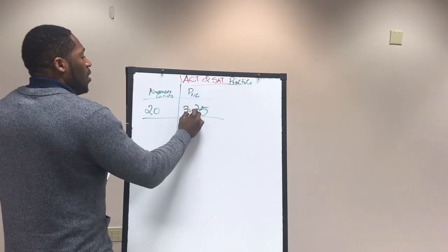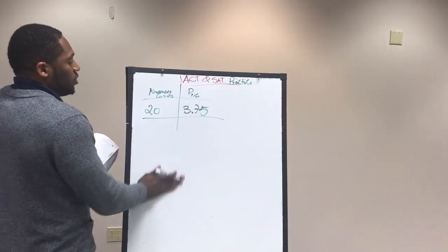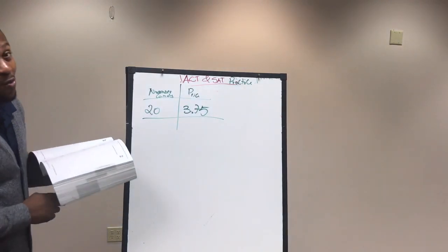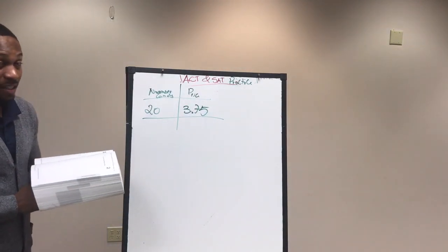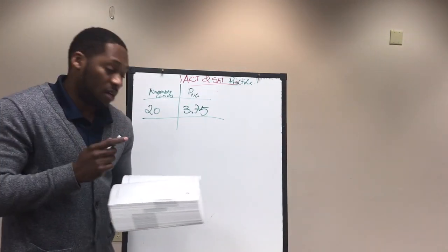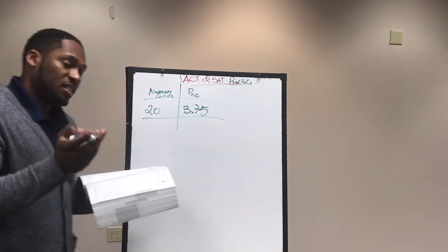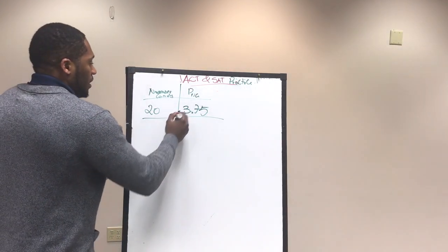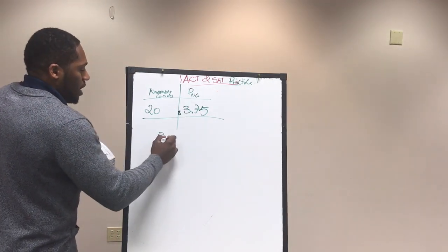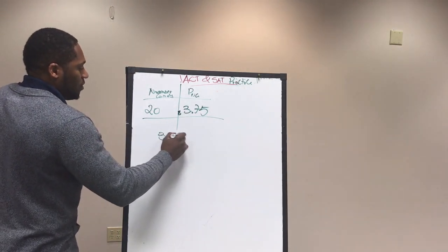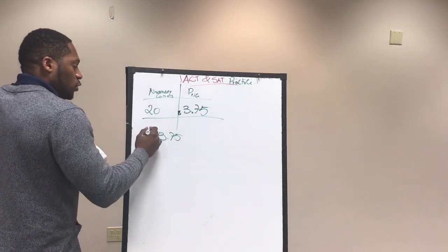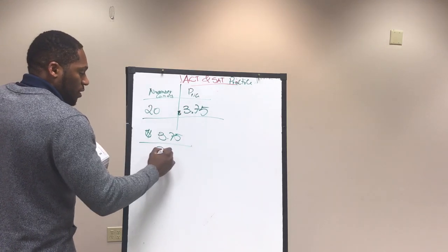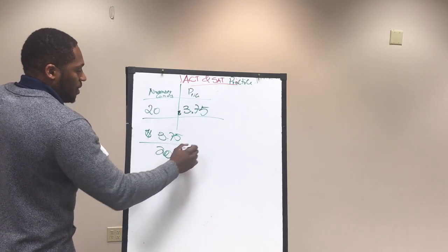So on average, what they're asking is: what is the price of one candy inside that box? Easy, right? We already have a price of $3.75 for 20 candies. We need the average, so we divide by 20.